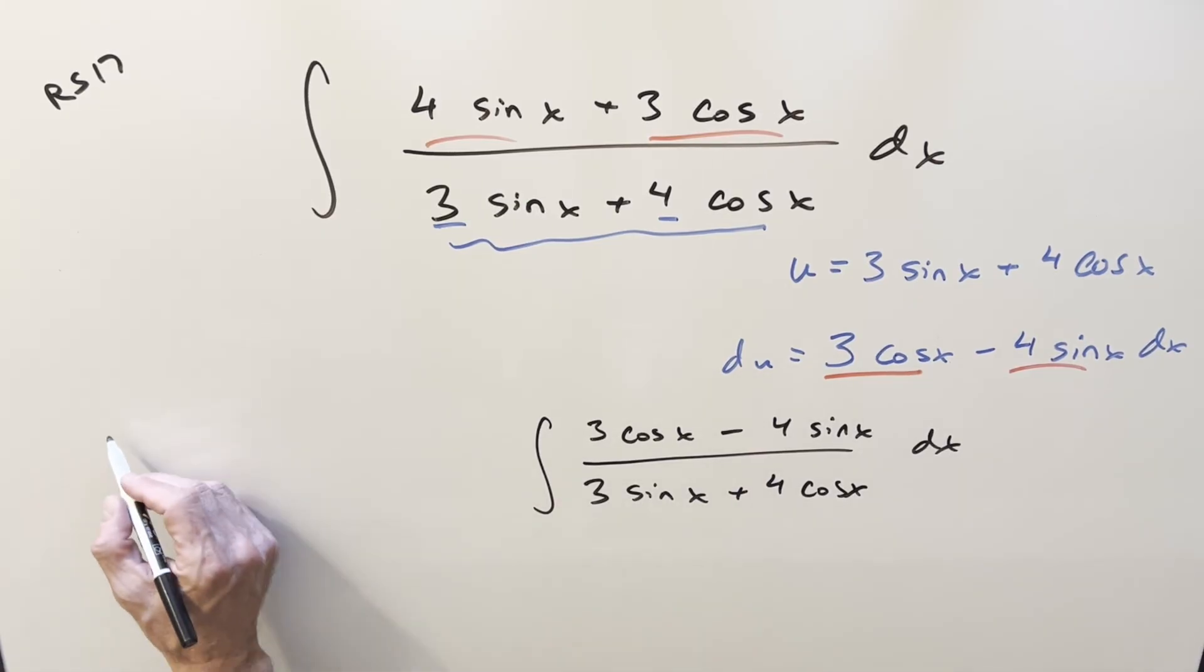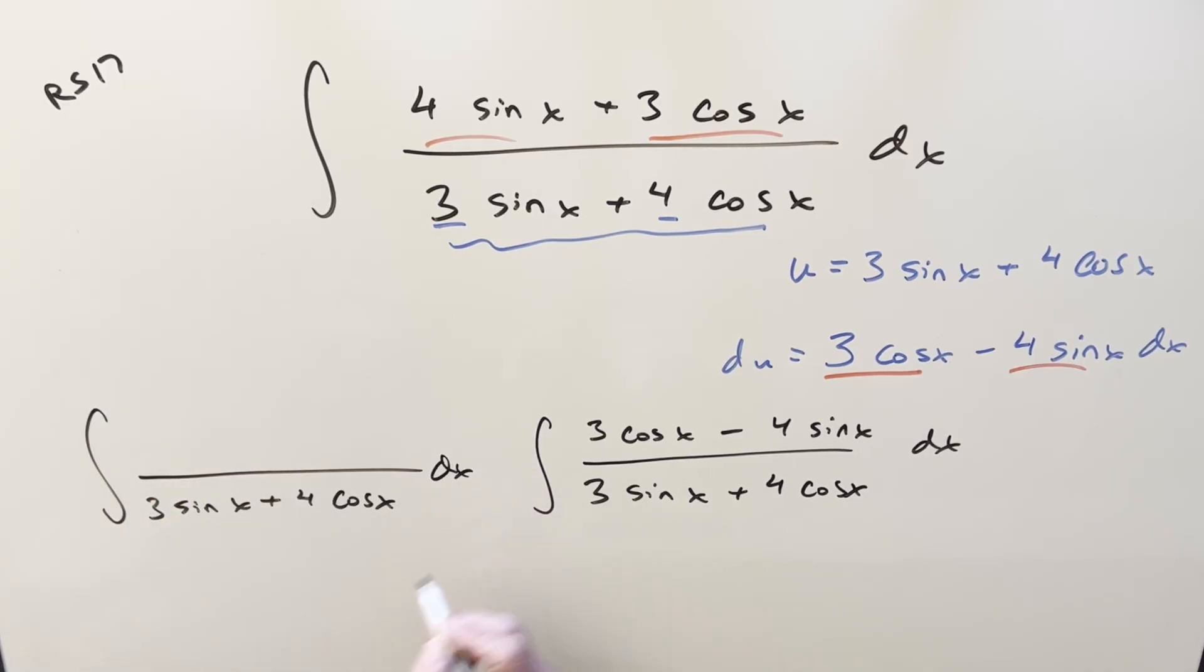And then what I'll do to go along with it is create another easy integral. Same exact denominator. And then here on this one to make it work, I can create it to be exactly the same as this. I can create an integral that's just 1. So we'll do 3 sine x plus 4 cosine x. So now I've created two very easy integrals. This one's going to be natural log of this. This one's just 1. So we just integrate this to x.